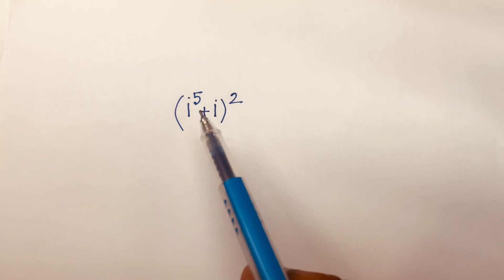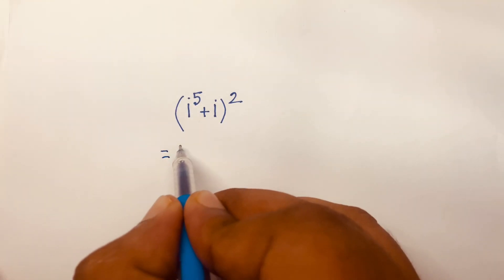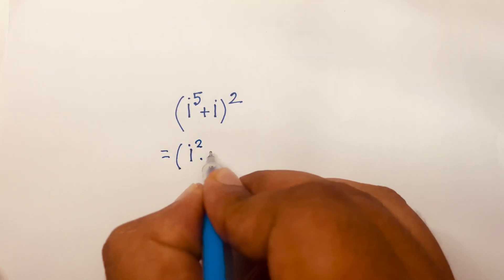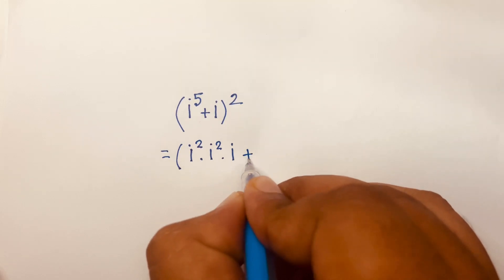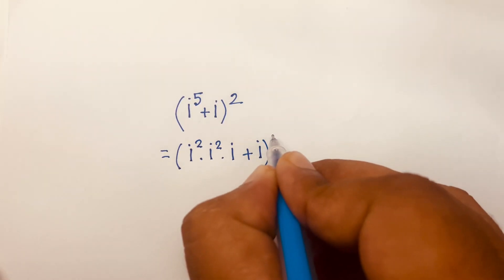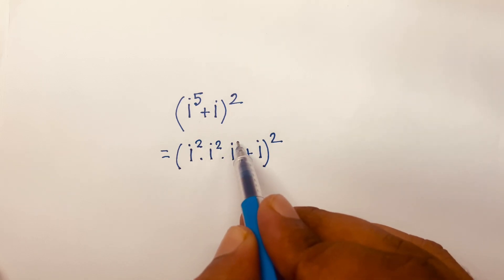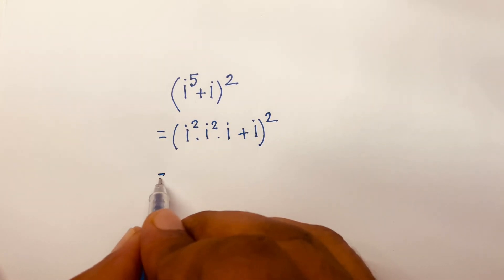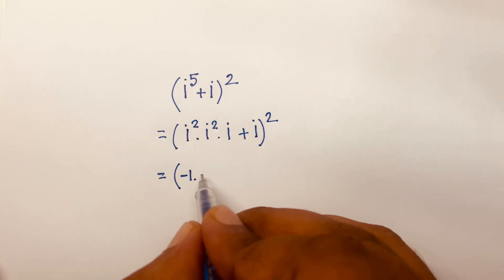How to solve this math question: i to the power 5 plus (i + i) to the power 2. First, i to the power 5 can be written as i squared times i squared times i. Since 2 plus 2 plus 1 equals 5, we break the exponent this way. Now i squared equals negative 1, so we have negative 1 times negative 1 times i.